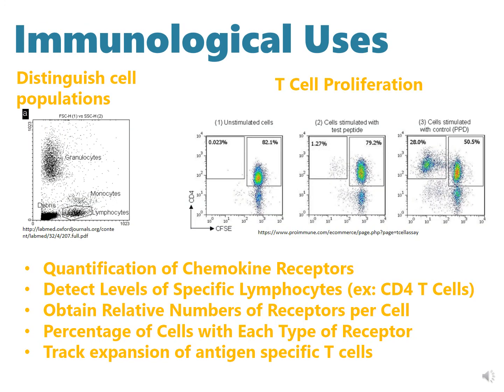Some other immunological uses are to distinguish cell populations as well as T cell proliferation, the quantification of chemokine and cytokine receptors, determining related numbers of receptors per cell, percentage of cells with each type of receptor. Direct expansion of antigen-specific T cells can sort either of these.